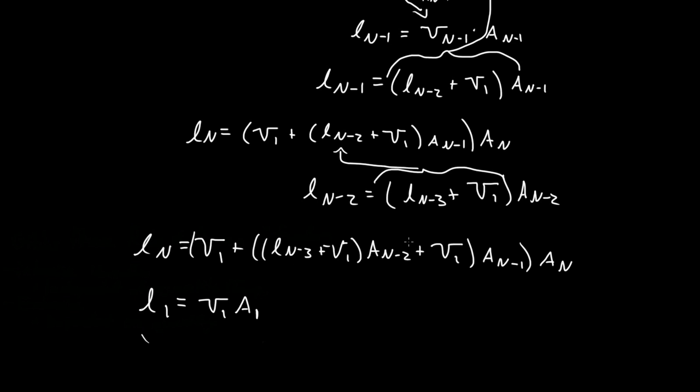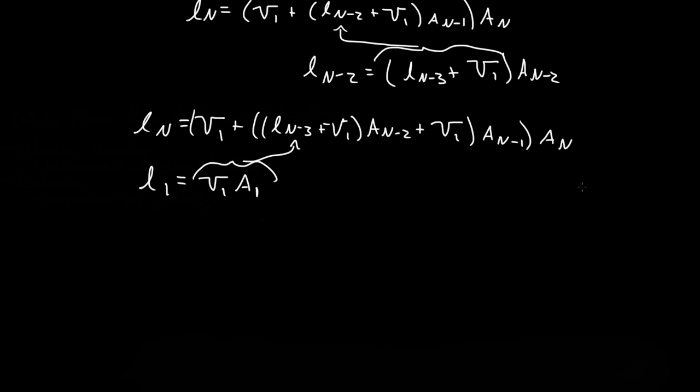So if we know what L_1 equals, and let's say this goes down to L_1, let's say n minus 3 equals L_1, then we just plug this right there. So what it really turns out to be is that L_n is...